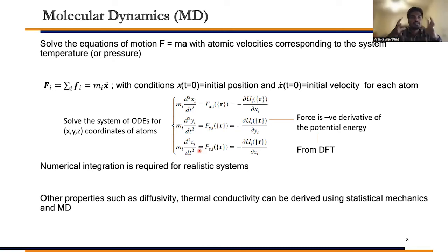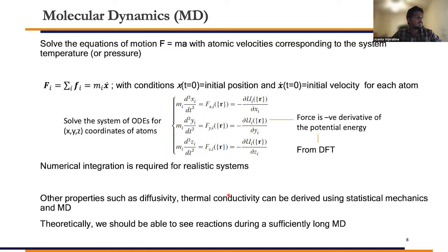You get forces for each new position and march forward, progressing with time to see how your system of molecules evolves. The forces come from density functional theory — forces are the negative derivative of energy. Properties like diffusivity and thermal conductivity can be derived using molecular dynamics. Theoretically, you should also be able to see reactions happening in the system if you wait long enough. If your reactions are too slow, you have to wait a very long time to see them happen.